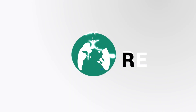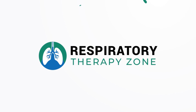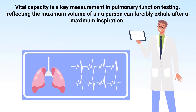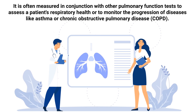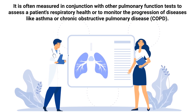Vital capacity is a key measurement in pulmonary function testing, reflecting the maximum volume of air a person can forcibly exhale after a maximum inspiration. It is often measured in conjunction with other pulmonary function tests to assess a patient's respiratory health or to monitor the progression of diseases like asthma or COPD.